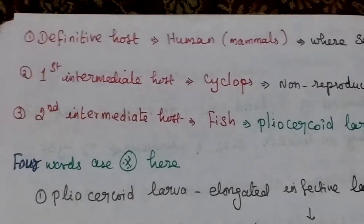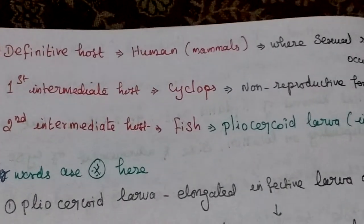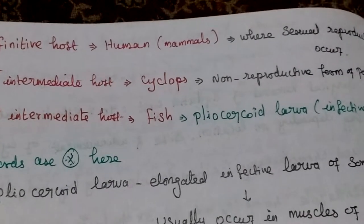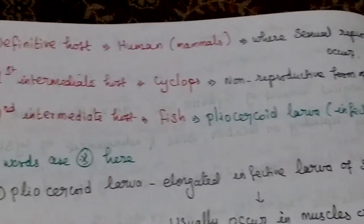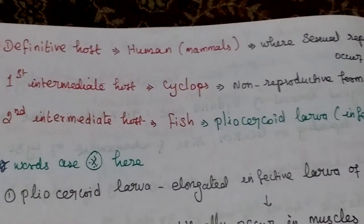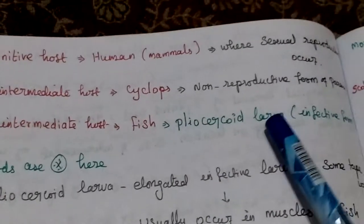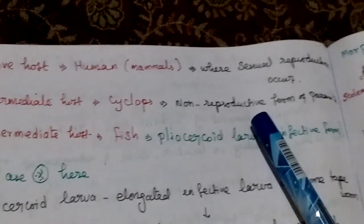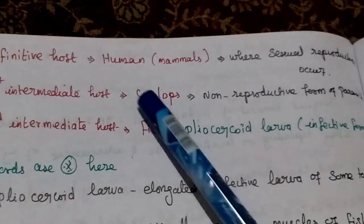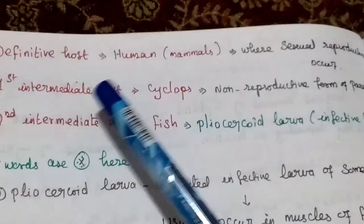The definitive hosts are human, dog, and cat. The definitive host is where sexual reproduction occurs. In this case, the primary definitive host is human.